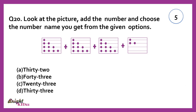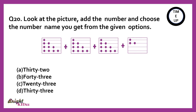Look at the picture and add the numbers and choose the number you get from the given options. In each box there are 10 circles present: 1, 2, 3, 4, 5, 6, 7, 8, 9, 10. So this is 10 plus 10 plus 10 equals 30, plus 1, 2, 3 more. The number is 33.